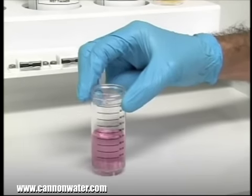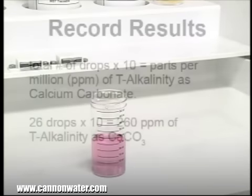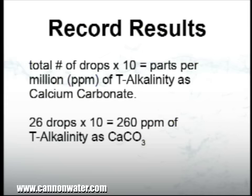According to the endpoint ID procedure, the titration is complete when the sample changes from green to red. In this example, the titration took another 13 drops to reach endpoint. Combined with the 13 drops from the first titration, it has taken a total of 26 drops. Each drop was equivalent to 10 parts per million of alkalinity. Therefore, the sample contains 260 parts per million of total alkalinity as calcium carbonate. This concludes our demonstration of the PNT alkalinity drop count test kit.